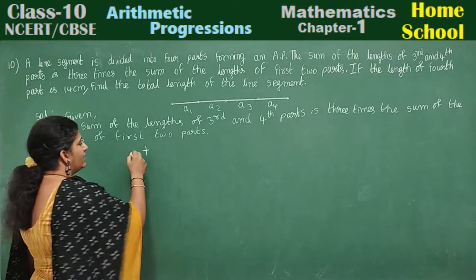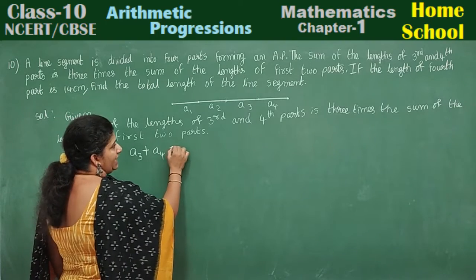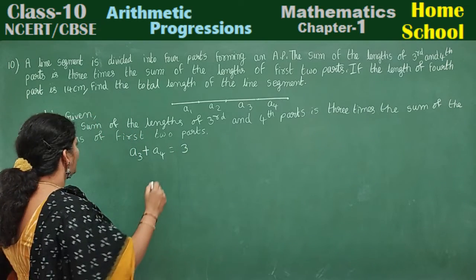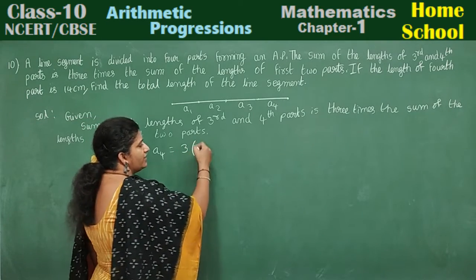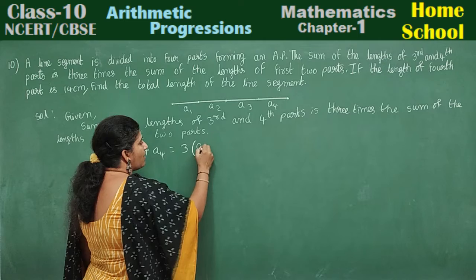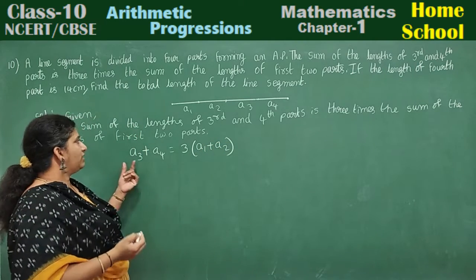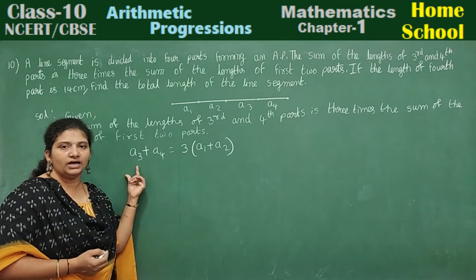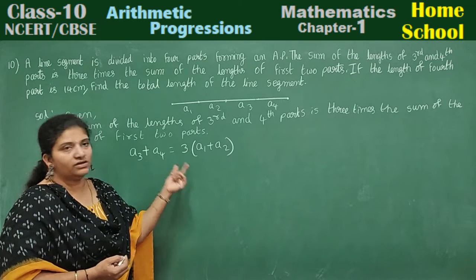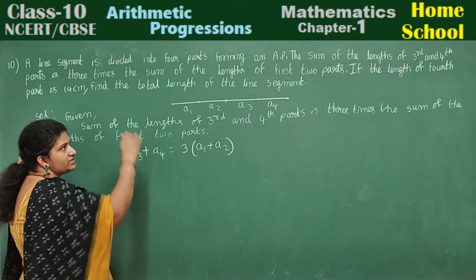Third part is a3, plus a4, is equal to three times the sum of the lengths of the first two parts. Three times means three into what are the first two parts — a1 and a2. So: a3 plus a4 is equal to three into a1 plus a2.